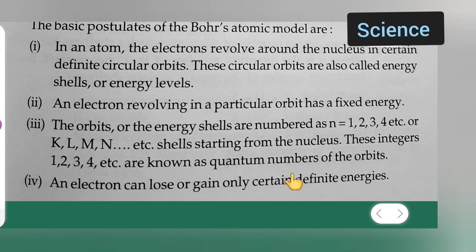And the fourth point is: an electron can lose or gain only certain definite energies.